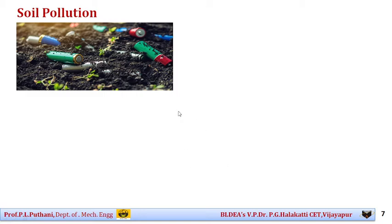If you observe carefully, there is a small photo showing some battery cells disposed onto the ground. Once battery cells have been used and we think there is no energy, we dispose them directly onto the ground. But remember, there are still chemicals present in them, and when those chemicals come out through leakage and mix with the soil, the soil becomes poisonous or toxic. This is an example of how a disposed battery causes damage to the soil.